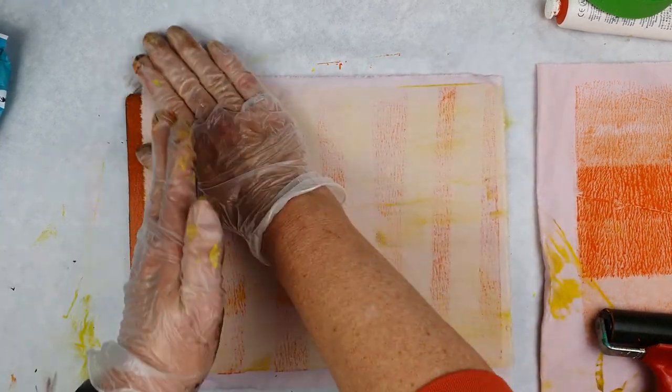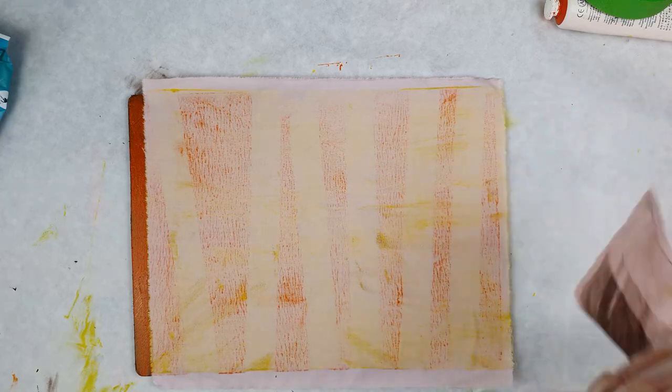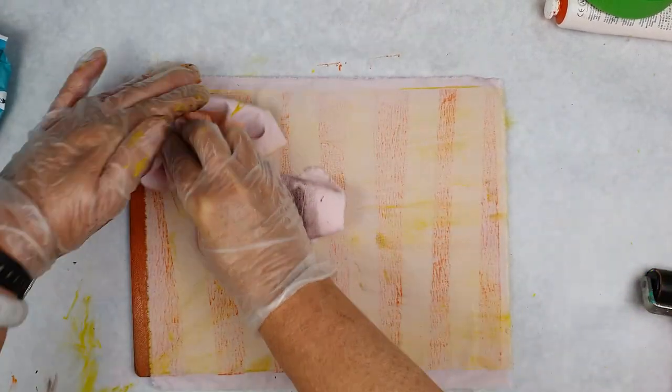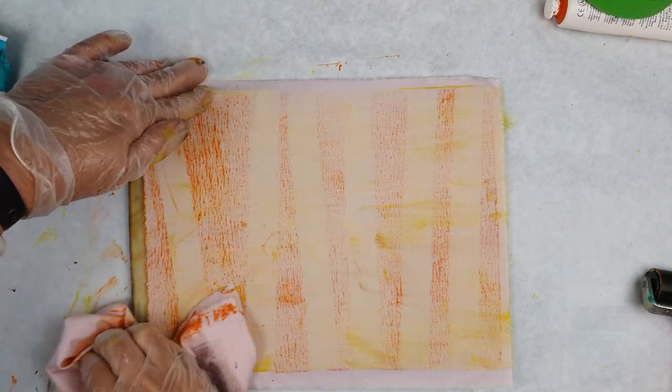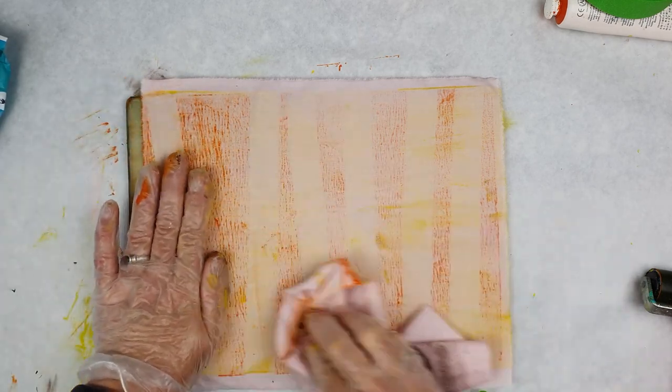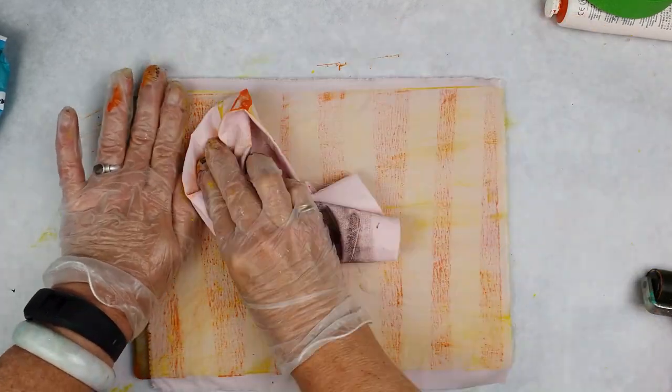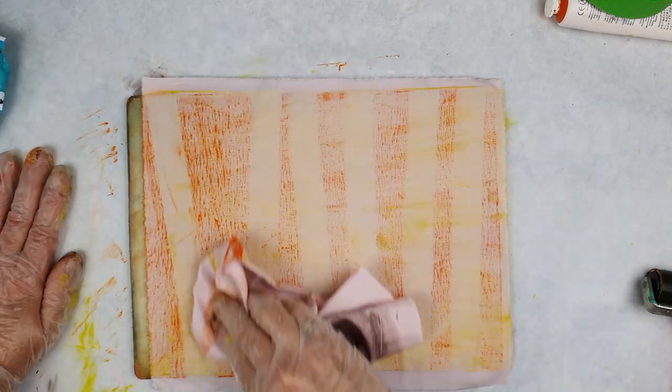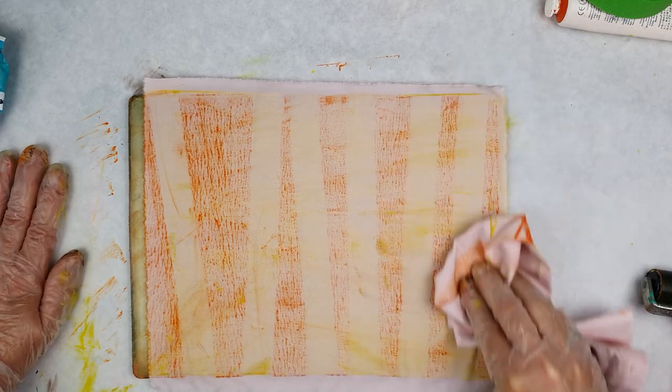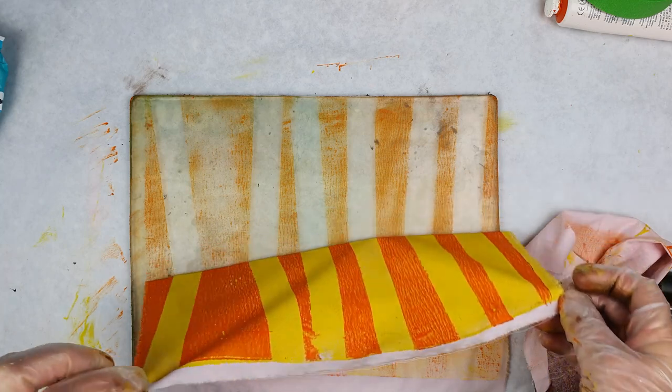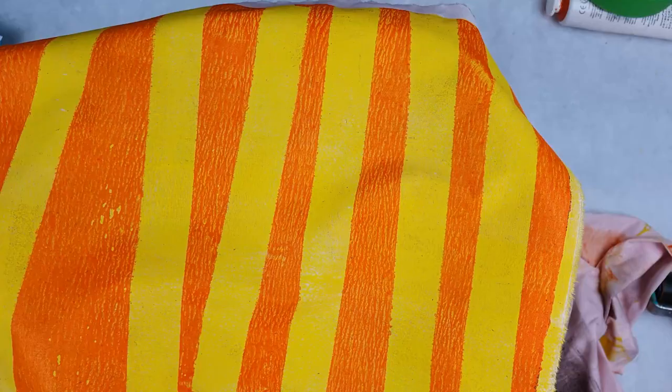I always love this, you can see it coming through. I'm just going to use my cloth to help smooth it down and get rid of that excess paint, and just try and make sure that I have good contact all the way across my fabric. There we go, some amazing bright stripes.